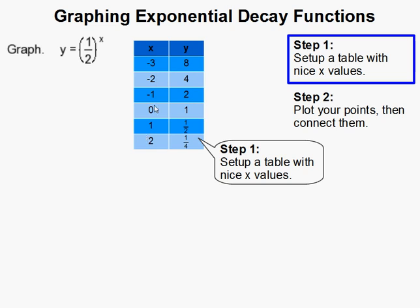Those are a lot easier to substitute into here and then calculate. So if I do negative 3 for x, that's actually going to make this 8. Negative 2 for the x gives me 4, and so on.